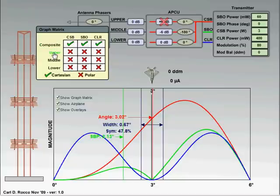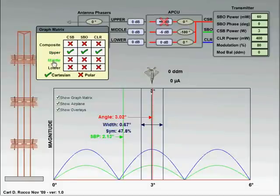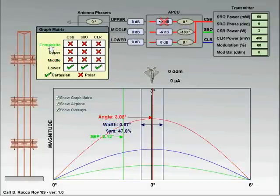If you want all upper antenna signals you can just click on upper, middle, lower, back to composite.